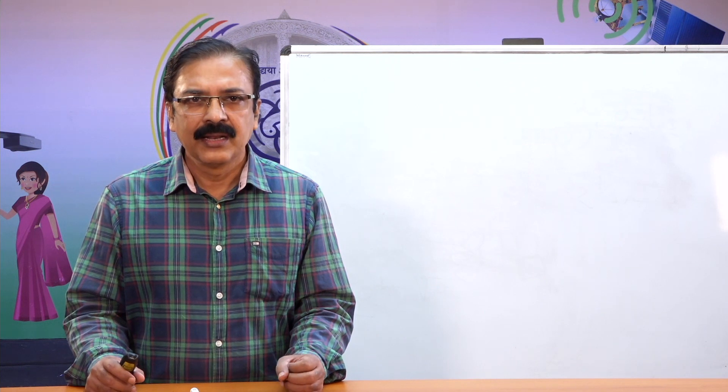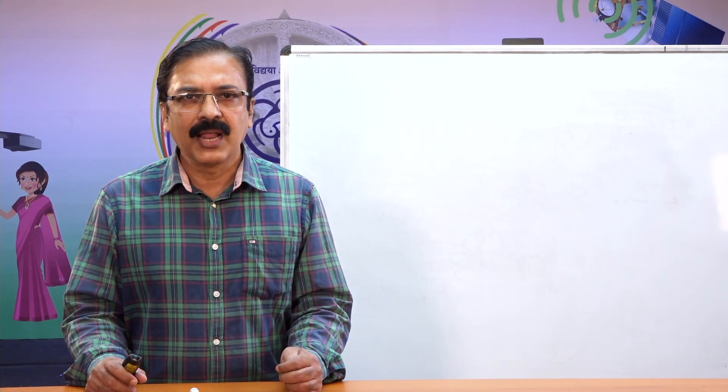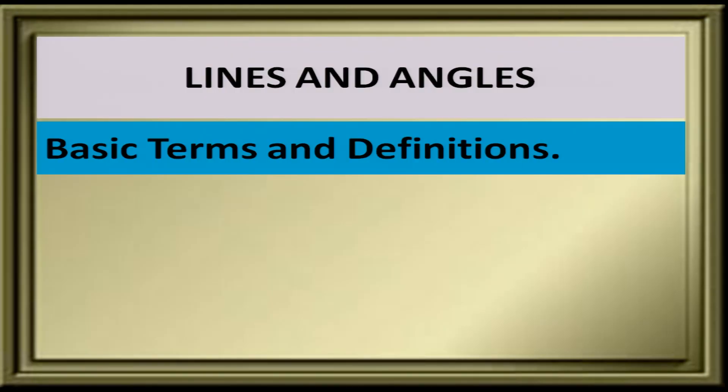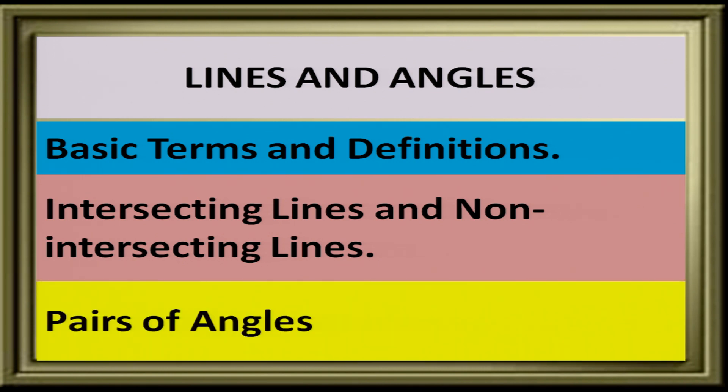A point is undefined — we cannot define a point. We also cannot define some other terms like plane and straight line. But the whole geometry subject is built on these undefined terms. Today, we are going to learn about some definitions: lines and angles, intersecting lines, non-intersecting lines, and pairs of angles.